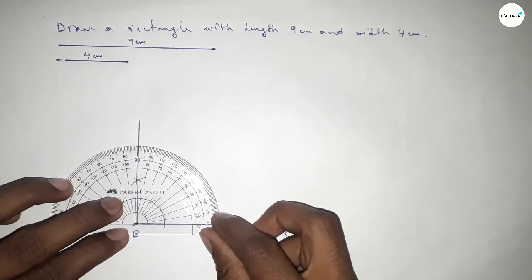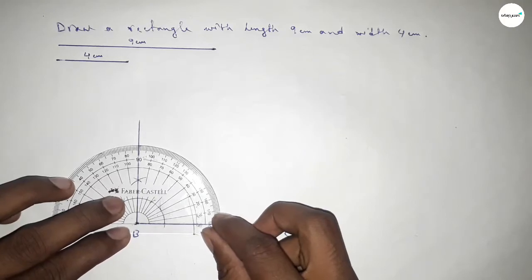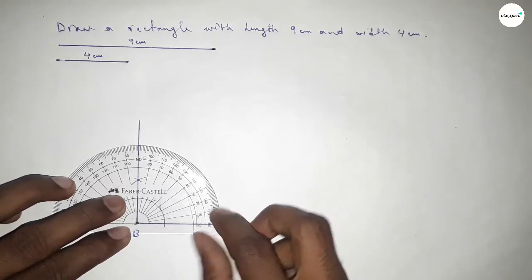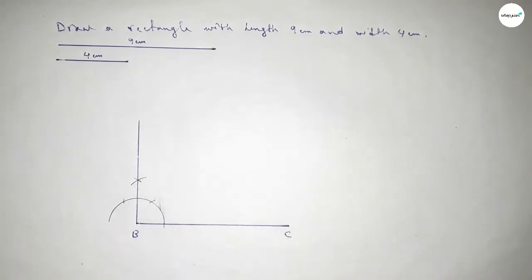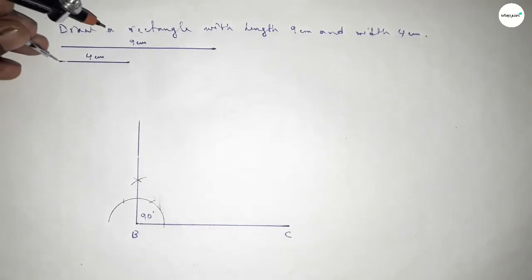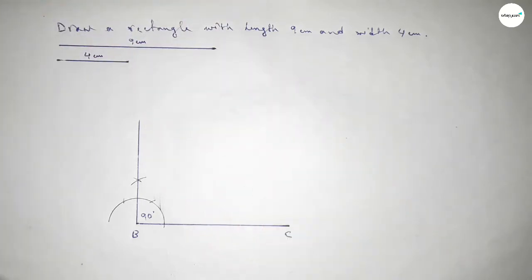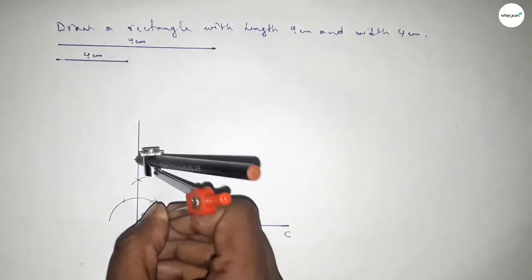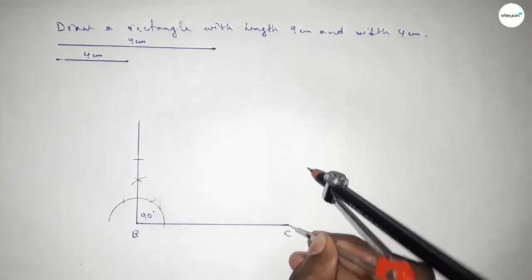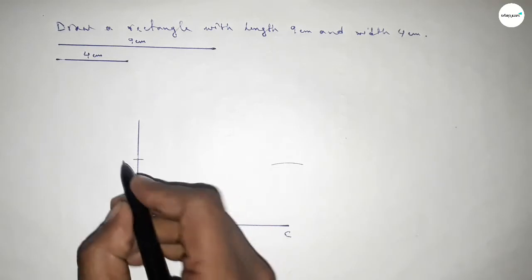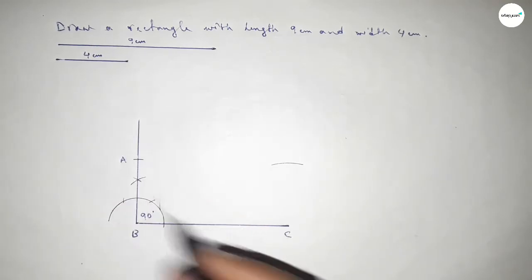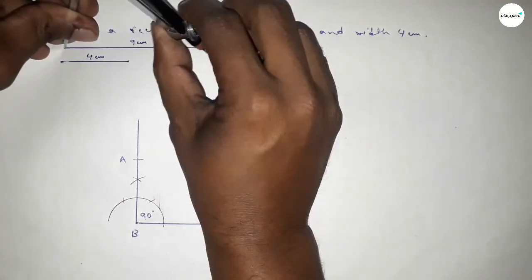Now checking whether it is 90 degree or not — so this is perfectly a 90 degree angle. Now taking the length 4 centimeter using the compass and putting the compass here, cutting here, and controlling the arc to intersect at a point.